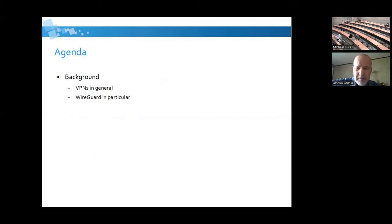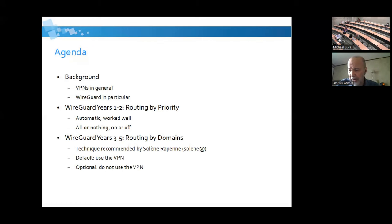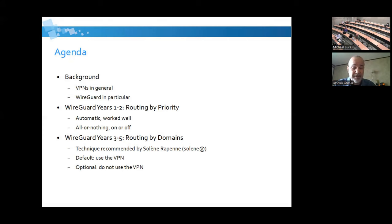The agenda today has three parts. I'm going to talk about VPNs very generally — this used to be confusing to people, but with all of the commercial VPN space, usually not anymore. Then WireGuard in particular, then what I did in the first couple of years with WireGuard, which was a big all-or-nothing switch for me. Then Solen Rapin produced a guide on routing domains which I read, a light bulb went off, and it was very helpful because I had been using a WireGuard solution on Android where I could pick and choose which applications would use it or not, and I wanted that capability in OpenBSD.